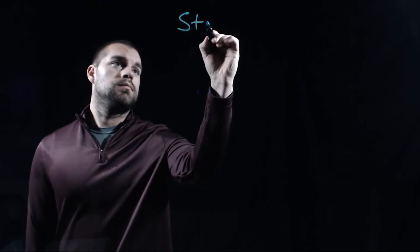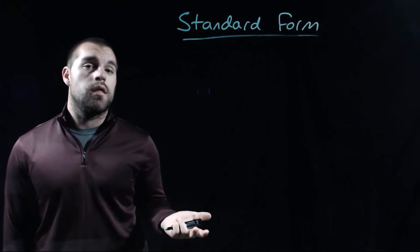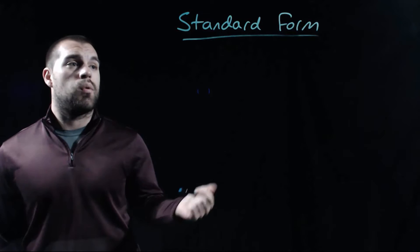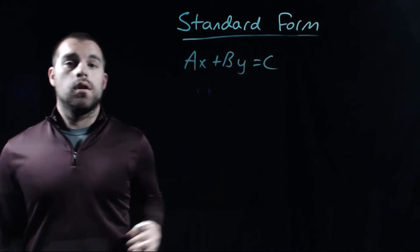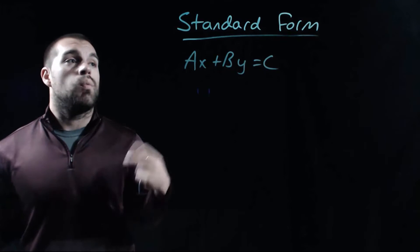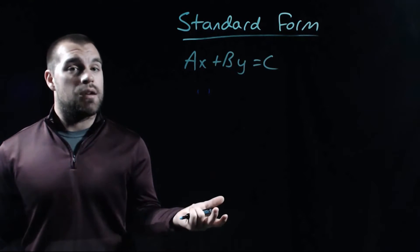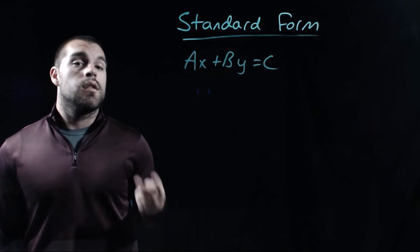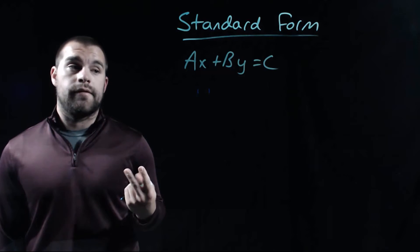Now not every equation that we graph out is going to be given to us in slope-intercept form like that last one was. There's another form that we commonly use called standard form. And a standard form equation looks like Ax plus By equals C. And when we're given an equation in standard form and we want to graph it out, we're going to do so by finding some intercepts. There's two different kinds of intercepts that we're going to find.